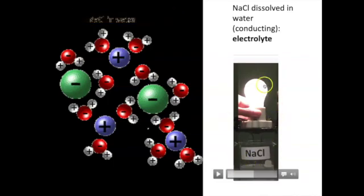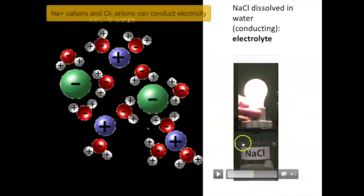And so this proves that there are ions in the solution, which are the sodium ions, the sodium cations, and the chloride ions, the chloride anions.